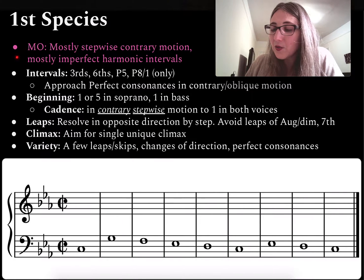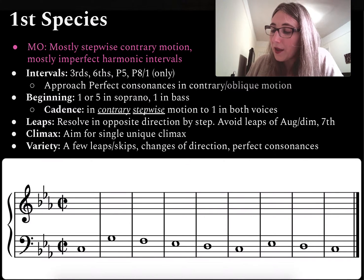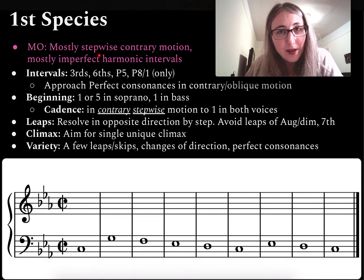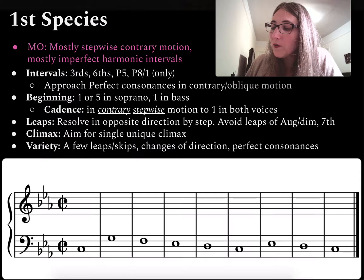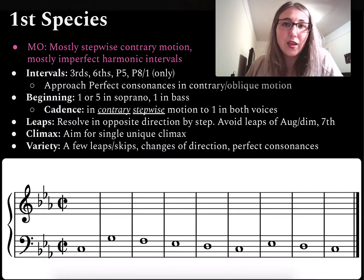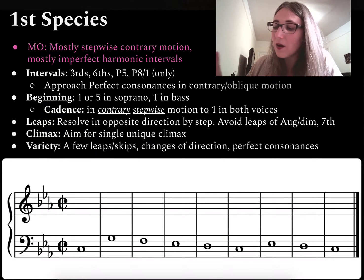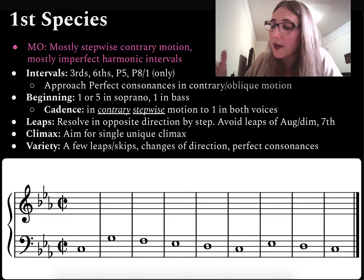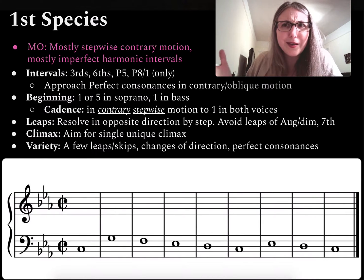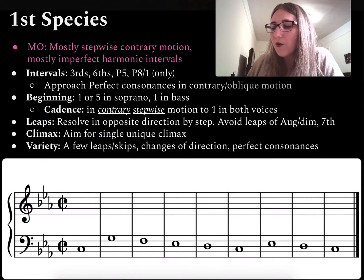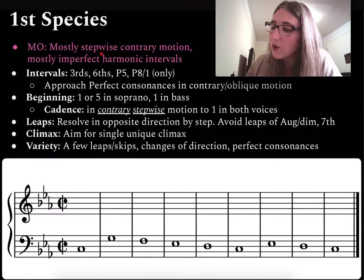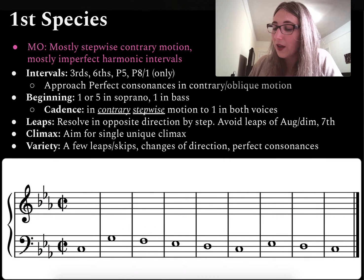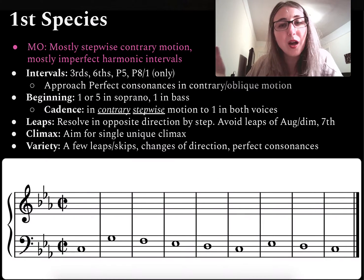The primary MO — and this is relevant to all the different kinds of species counterpoint — is that the counterpoint I'm writing against the cantus firmus should be mostly stepwise: a nice smooth melody line that moves in contrary motion to the cantus firmus generally. Of course I want a little bit of variety — I don't want it to be entirely stepwise. I'd like to have maybe a couple skips, maybe a leap for variety.